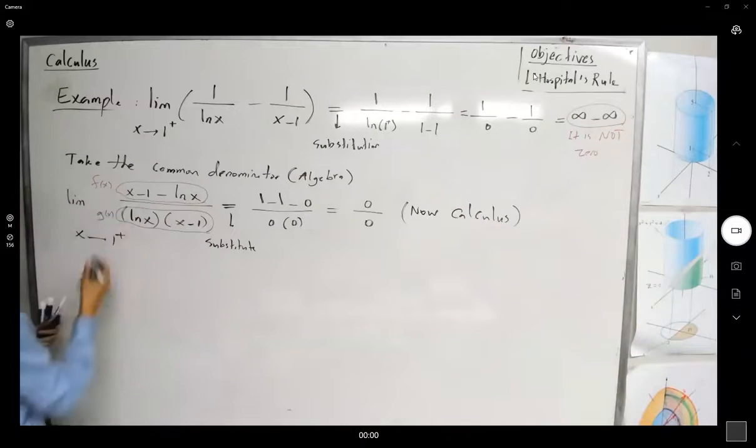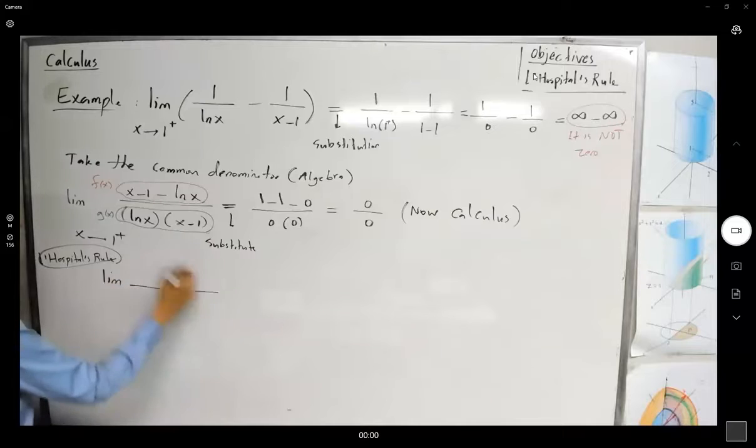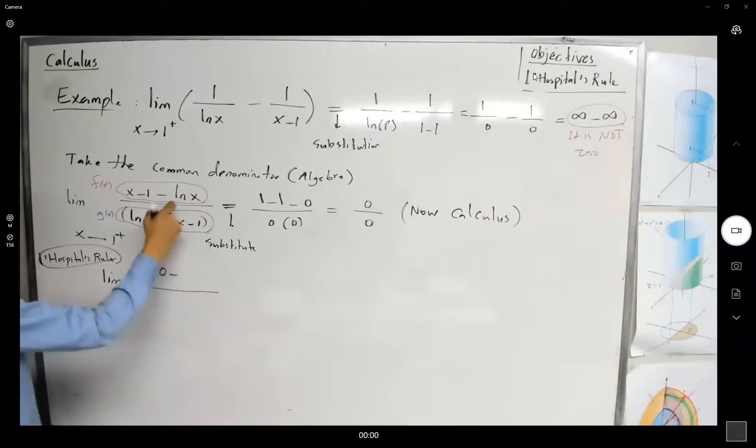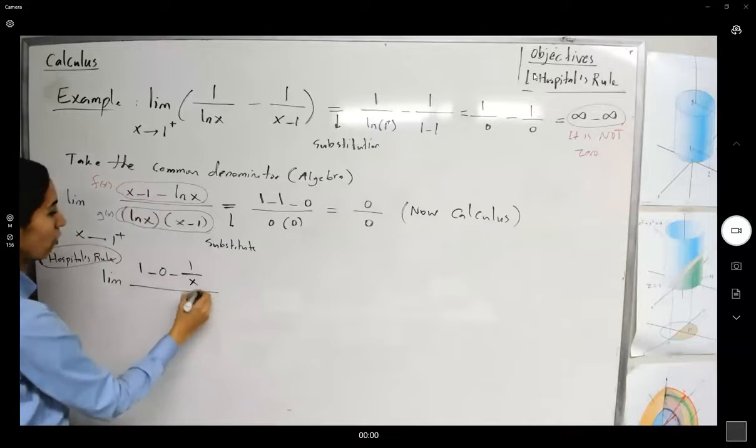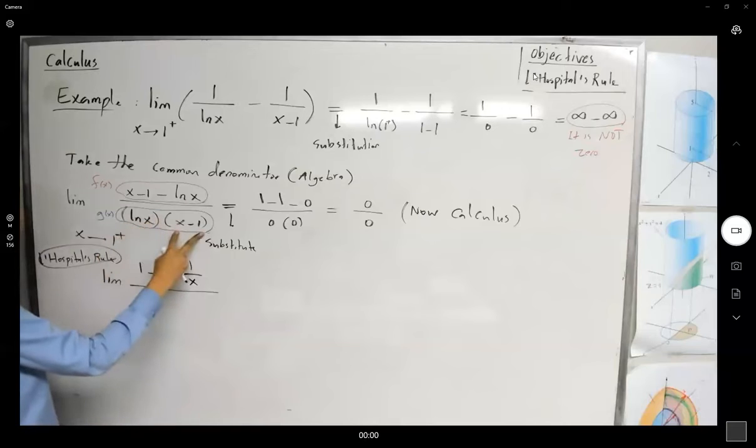The derivative of the numerator, the derivative of the denominator. We're using L'Hopital's rule. So here it is equal to the limit of the derivative of x is 1. The derivative of 1 is 0. The derivative of ln is 1 over x.